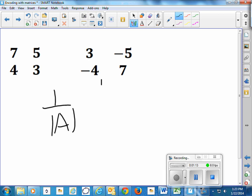It's 1 over that. Okay, so the determinant is 7 times 3, minus 4 times 5. So I've multiplied diagonals, and so that gives me 21 minus 20.